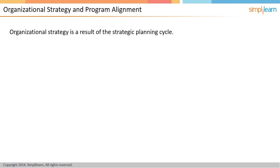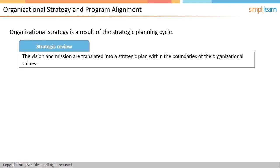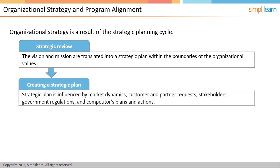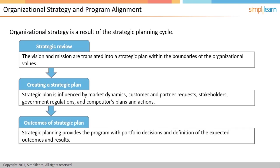Typically, an organization determines its strategy through a planning cycle. The strategic review is either pre-planned or calendar-based, or it can be triggered by a change in business conditions. In the strategic review, the organization looks at the vision and mission statements and translates them into a strategic plan within the boundaries of the organization's capabilities and core values. The strategic plan is made keeping in mind the business context — including market dynamics, specific requests from customers and partners, stakeholders, government regulations and mandates, and the plans of competitors. The outcome of strategic planning is the portfolio decisions, that is, decisions about where the organization would like to invest its resources. It also provides the program a definition of the expected outcomes and results that the organization is looking for.